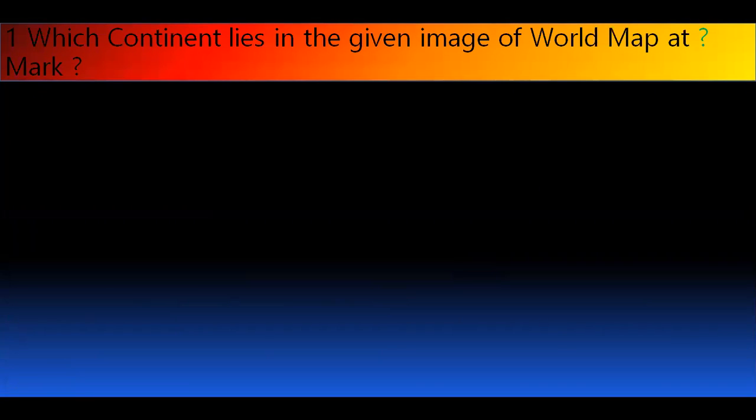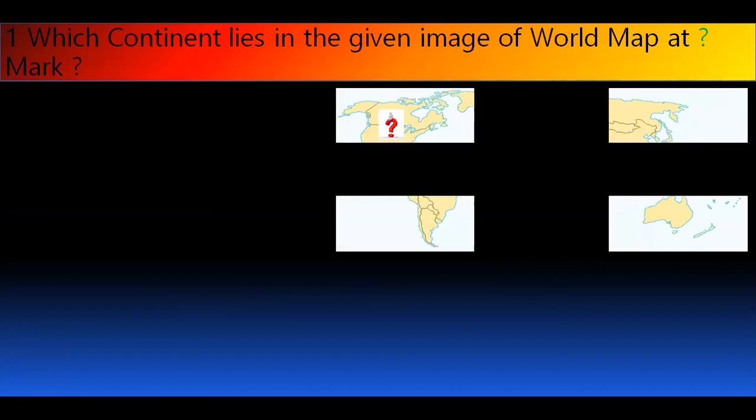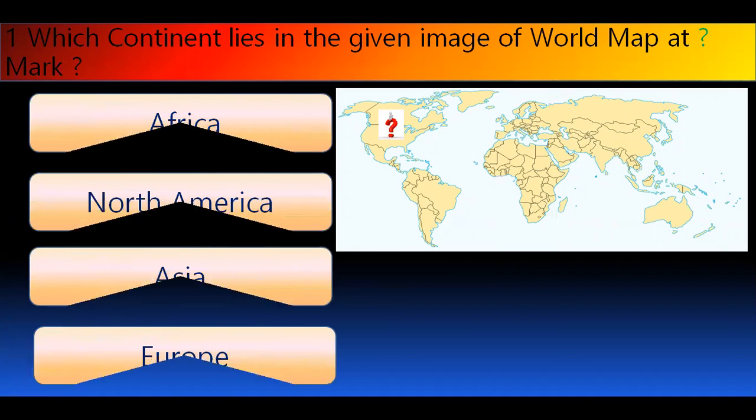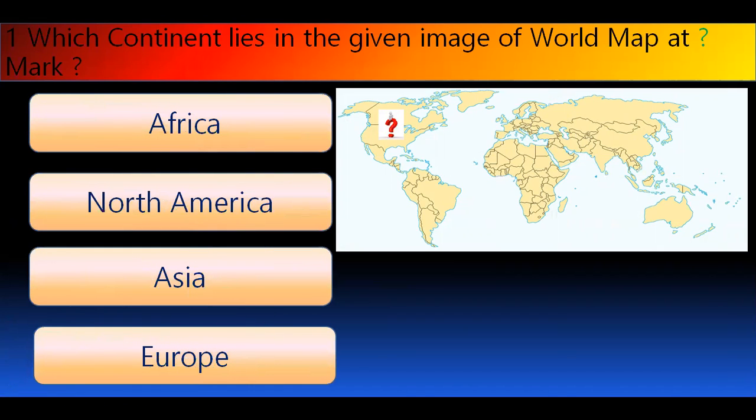Question number 1. Which continent lies in the given image of the world map? This is the image of the world map, and here is a question mark and you have to select or tell which continent is this. You can tell which continent is North America, Asia, or Europe. And the right answer is North America.